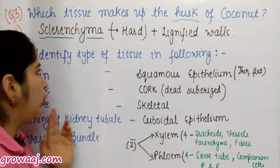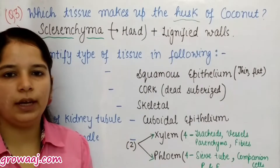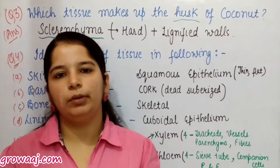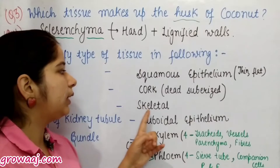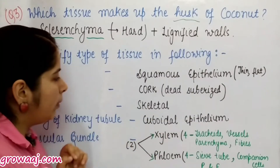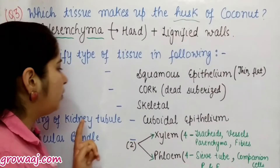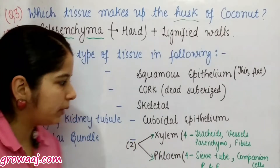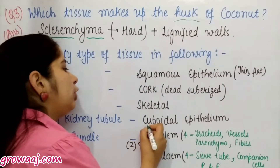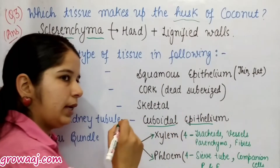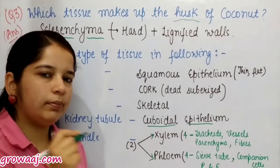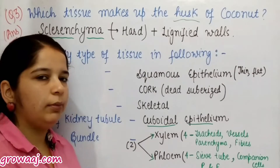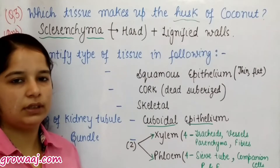Next is bone. Bone is hard but it is not a plant tissue — it is an animal tissue. So bone belongs to skeletal connective tissue. Next is the lining of the kidney tubule, which is cuboidal epithelium. These are cube-like cells present in the kidney. Cuboidal epithelium also forms glandular epithelium.